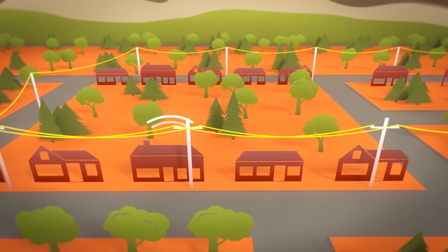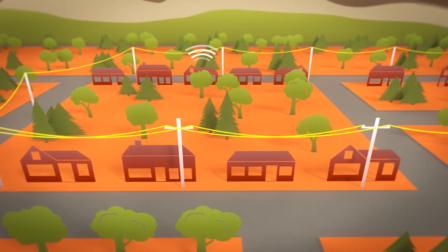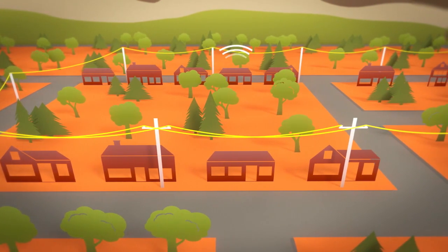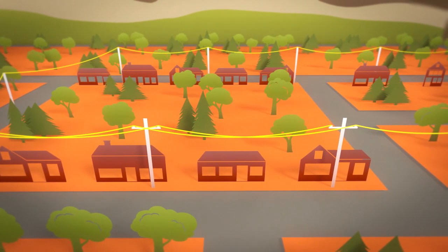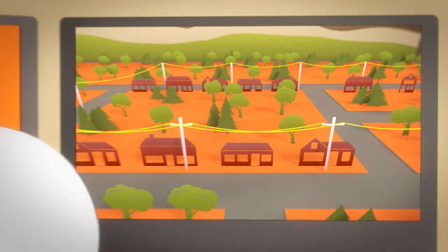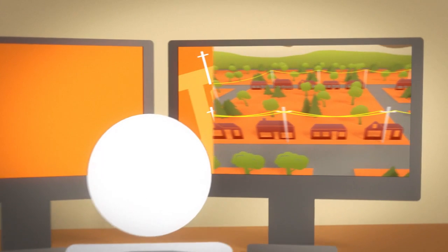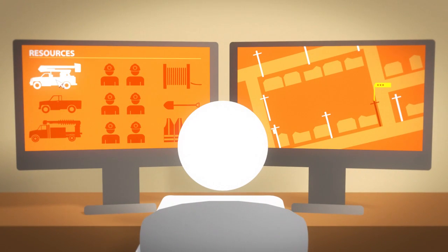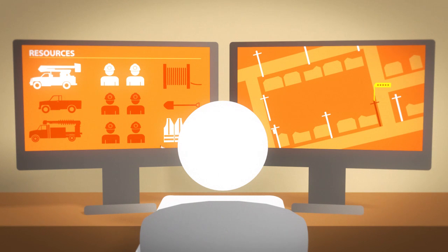Unitil relies on customer reports to pinpoint unplanned outages and trigger a restoration response. You can report an outage by phone or through Unitil's website. Whether the outage is planned or unexpected, Unitil uses its Outage Management System, or OMS, to track all the details. The OMS is a great tool for our employees and our customers.